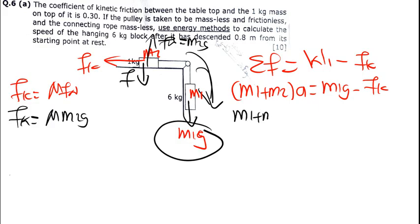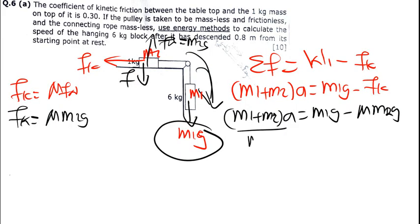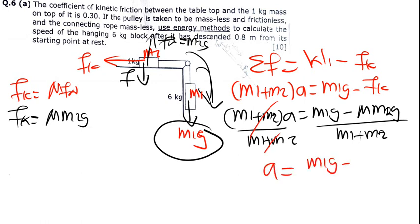(M1 + M2) × A = M1G − μM2G. Dividing both sides by (M1 + M2), the acceleration equals (M1G − μM2G) divided by (M1 + M2). This is the formula to use when there is friction in this pulley system.